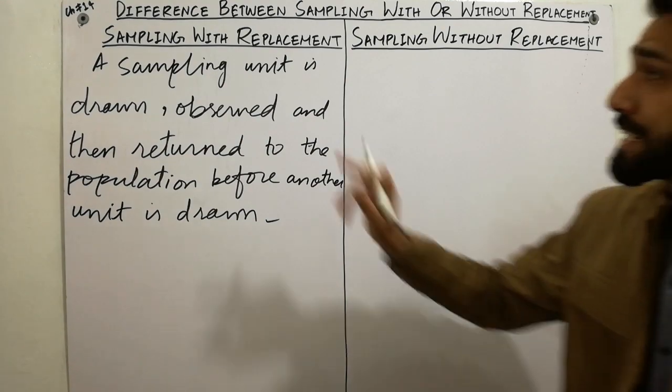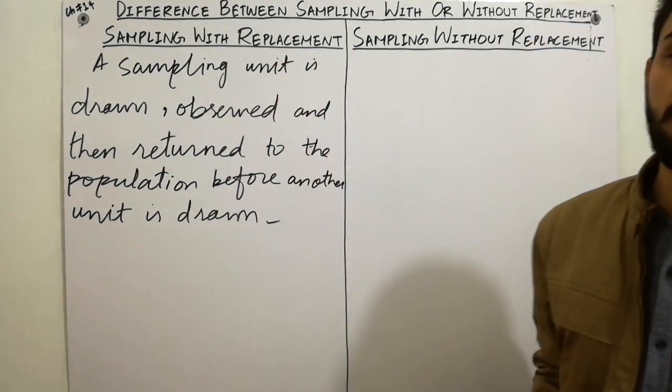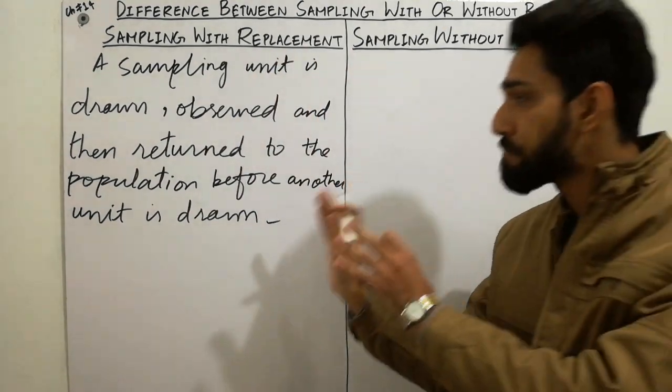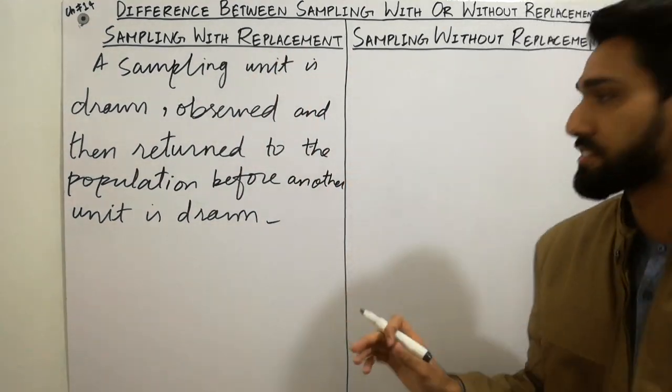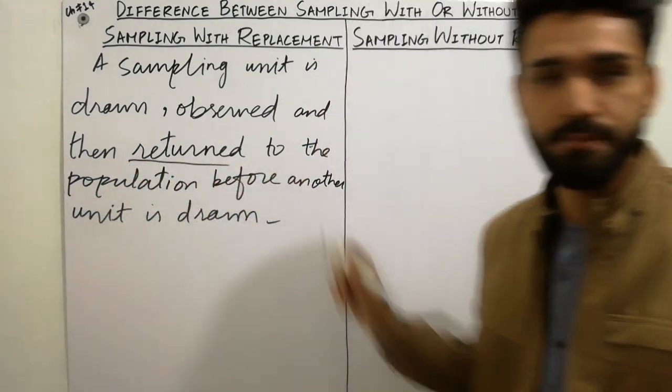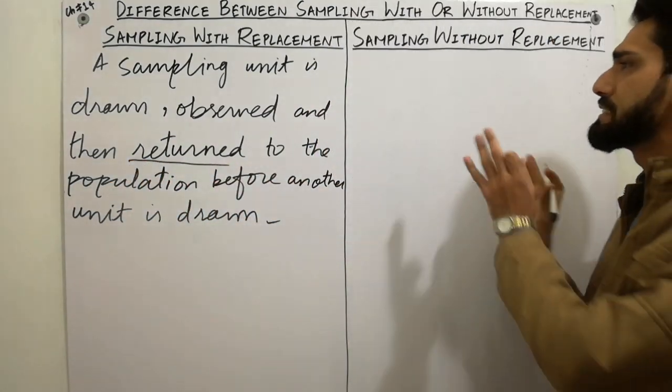The key point to remember in sampling with replacement is that the unit is returned to the population. Please remember this definition.